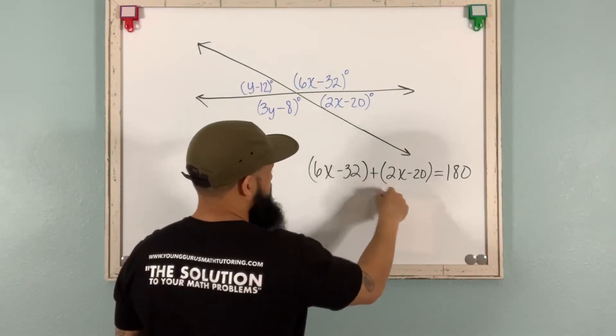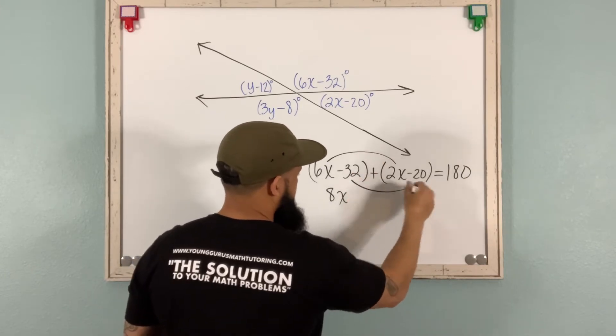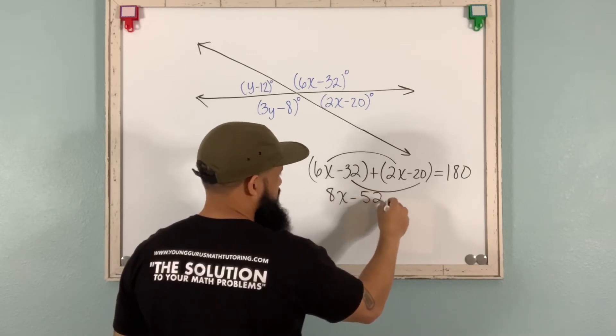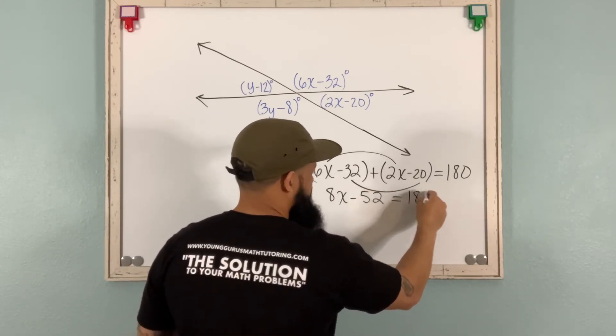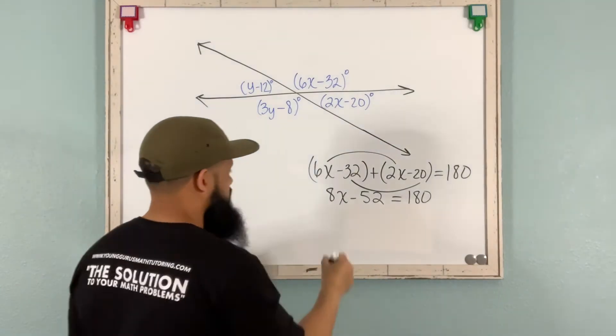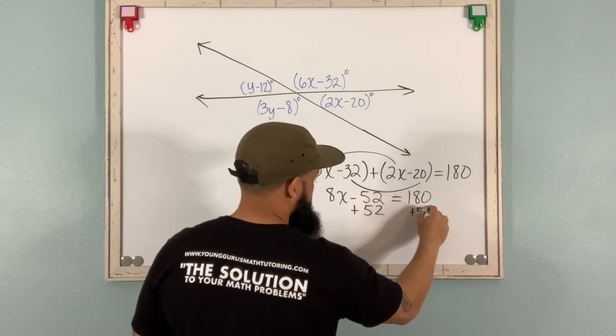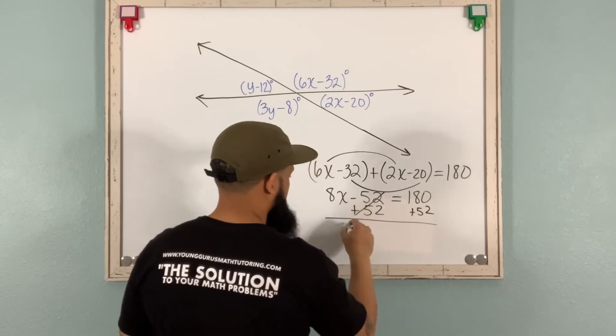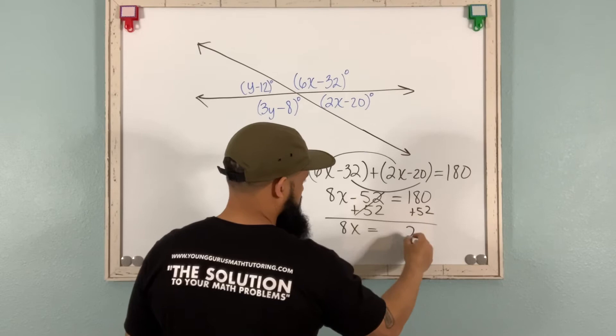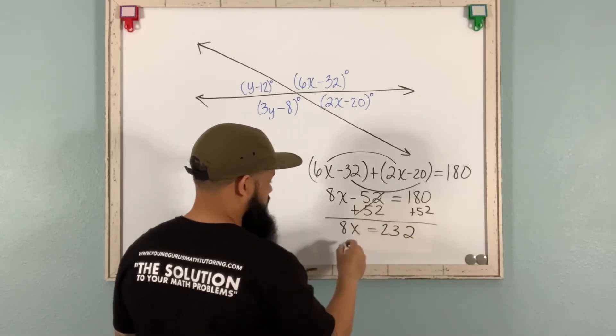So now let's go 6x plus 2x gives me 8x. Those are like terms. And then negative 32 plus negative 20 gives me negative 52. Be very, very careful with those signs because one little sign mishap can mess up everything. So now I want to get x by itself. So I'm going to add 52. And those cancel. 8x equals 232. All right? So then we divide by 8. We divide by 8.